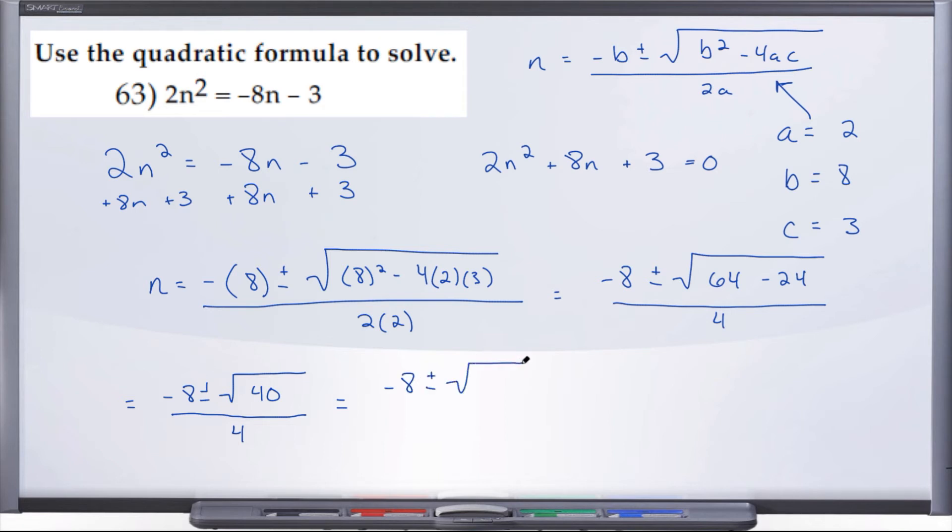Let's break this radical up into good stuff, bad stuff, all over 4. So 40 is not a perfect square, but what's the largest perfect square that we can multiply by some other number to get to 40? Hopefully you're thinking 4 and 10. 4 can come out nice and clean.